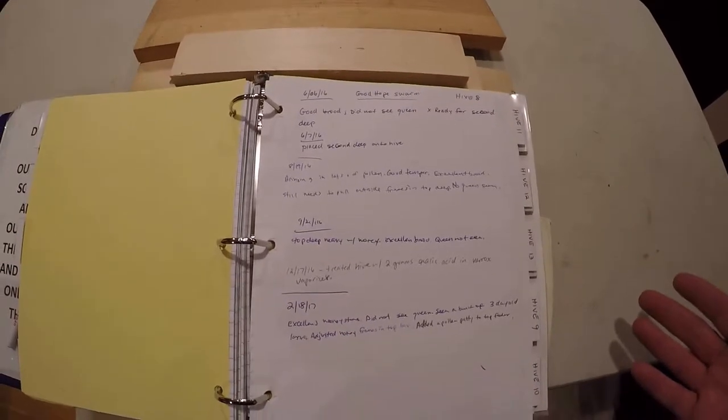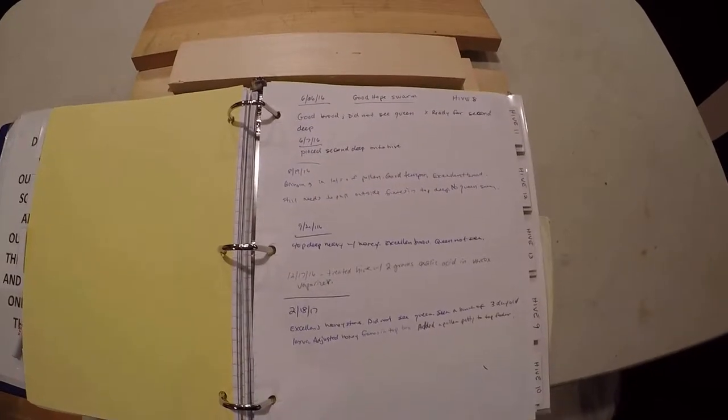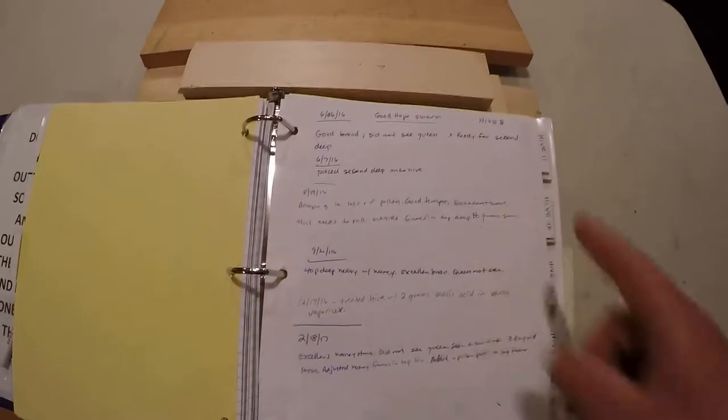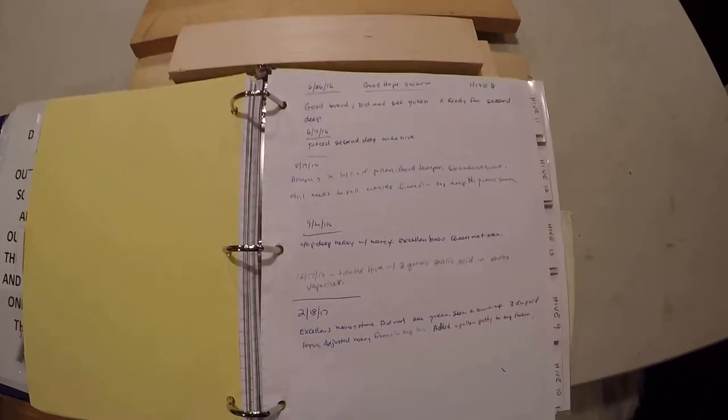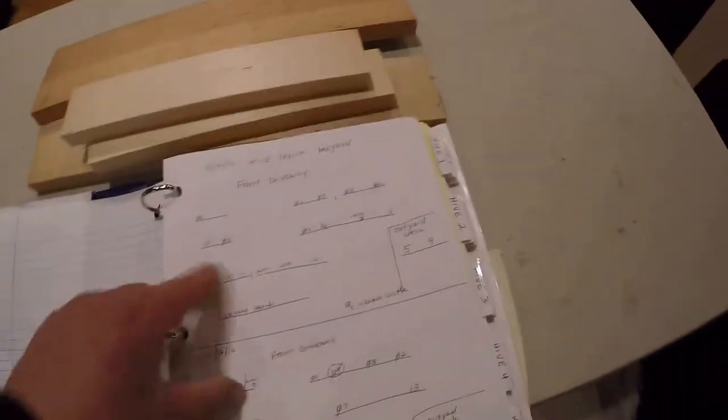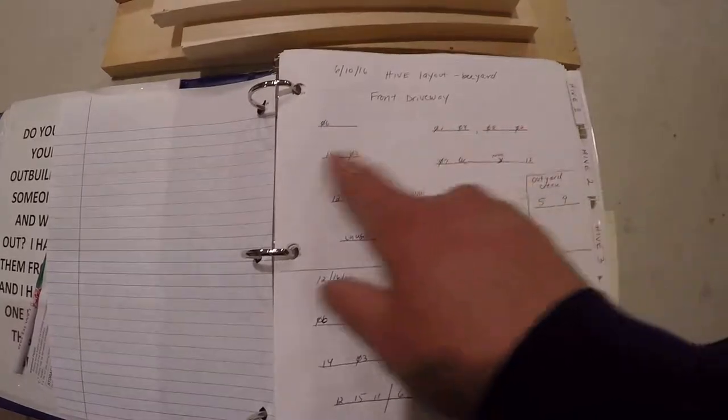I use mailbox tags on my hives that are on the rear of the hive for when I'm doing my hive inspections. So I can see a reference point there. I use the map because in the winter I tar paper all my hives, so when I tar paper hives I know what stand, where it's located.